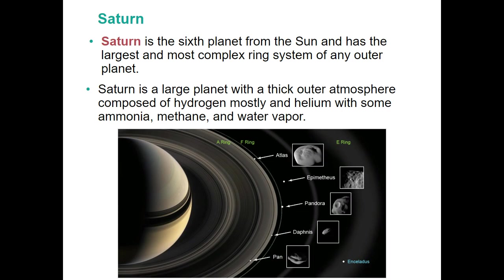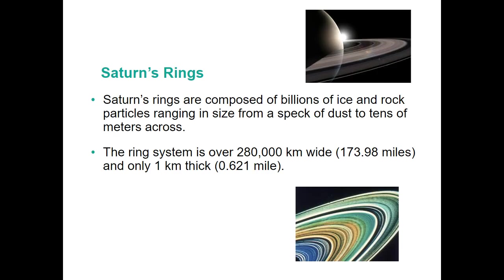Saturn is the sixth planet from the sun and another outer gas giant. It has a complex ring system made of water vapor, various gases, dust particles, and mostly hydrogen and helium. You can also see many moons around it — Saturn has more moons than any other planet in the solar system. Saturn's rings are composed of billions of ice and rock particles and are over 280,000 kilometers wide.